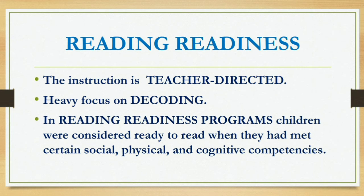Reading readiness typically occurs between nursery and kindergarten. The child is learning the relation between letters and sounds and between print and spoken words. In this stage, the child is able to read simple texts containing high-frequency words and phonically regular words, and use skills and insight to sound out new words. In relation to writing, the child is moving from scribbling to controlled scribbling to non-phonetic letter strings. The main aims are to further develop children's phonological awareness, letter-sound knowledge, and ability to manipulate phonemes and syllables.